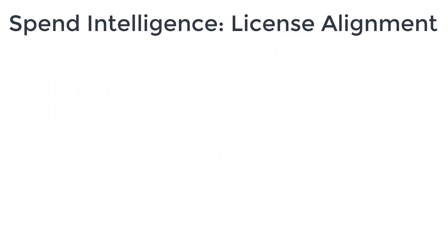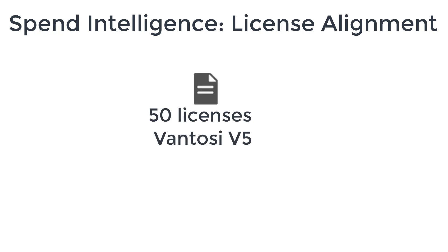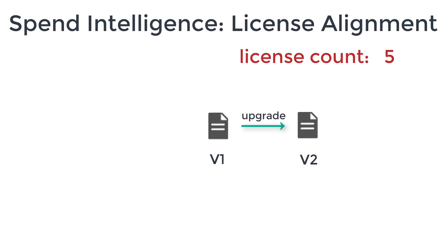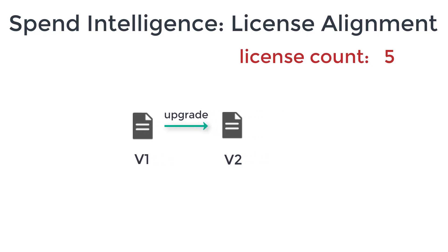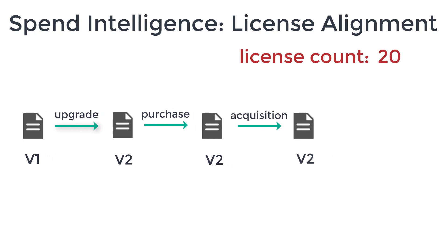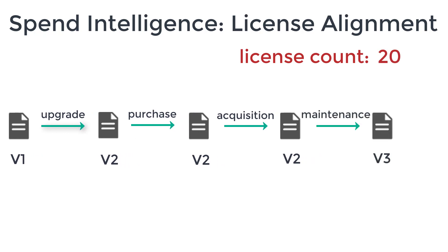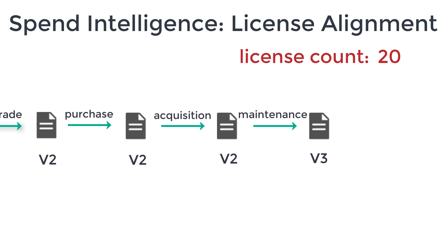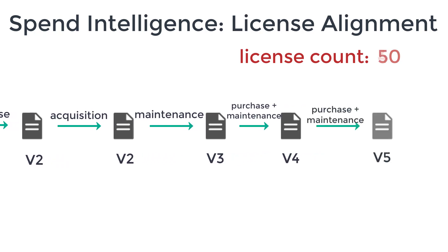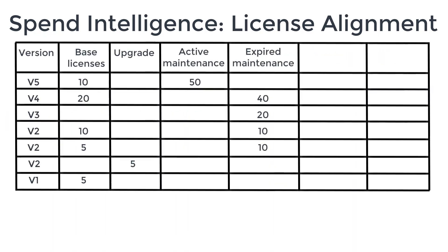Our fictitious company has an entitlement of 50 licenses for Vantosi V5, but they never bought 50 licenses for Vantosi V5. What actually happened is: many years ago they bought five licenses for Vantosi V1, then they bought some upgrade licenses to get to Vantosi V2, then they bought another five Vantosi V2 licenses, then they acquired a company that also had 10 Vantosi V2 licenses, and then they signed up to a maintenance contract providing upgrades to later versions, and so on until they had an entitlement for 50 Vantosi V5 licenses. Their license transactions look a bit complicated.